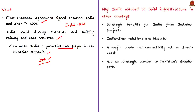The question is: why did India want to build infrastructure in another country with its taxpayers' money? The answer lies in the strategic benefits of the Chabahar project. India-Iran relations are historic, and India has sought to maintain these ties even in the face of opposition from the United States, Saudi Arabia, and Israel. A major trade and connectivity hub on the Iranian coast not only gives India an alternative route to Afghanistan but also acts as a strategic counter to Pakistan's Gwadar port, which is being developed by China and is geographically located near Chabahar port.